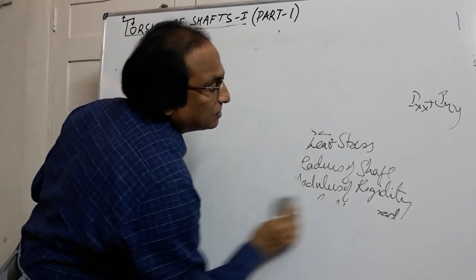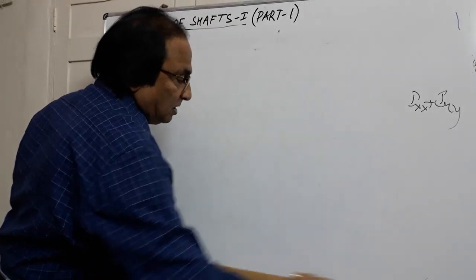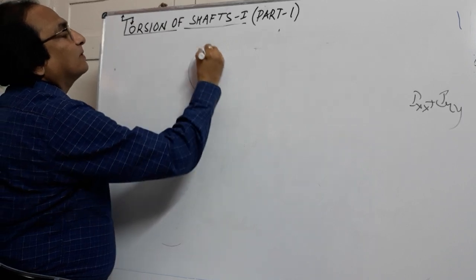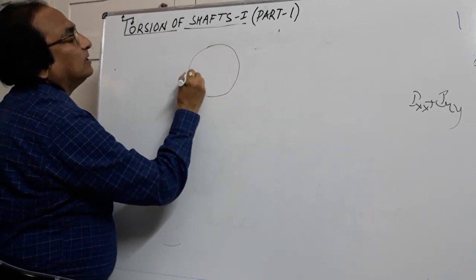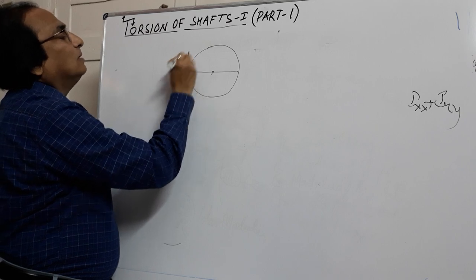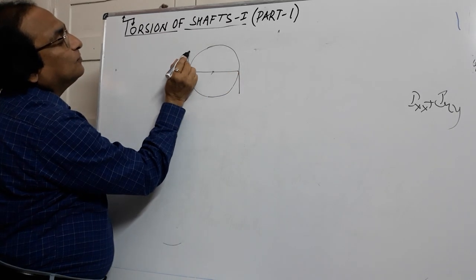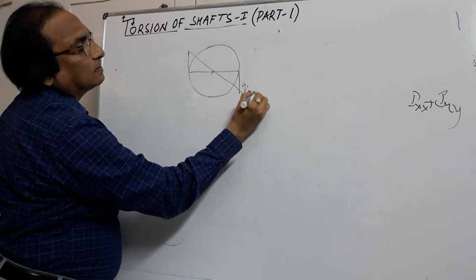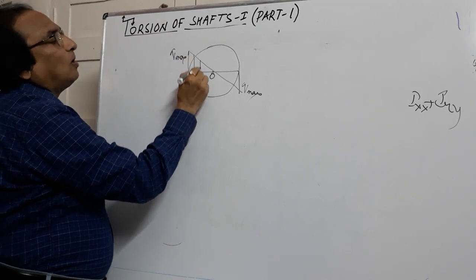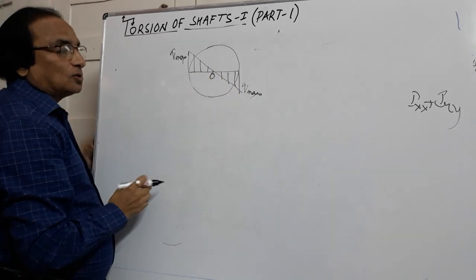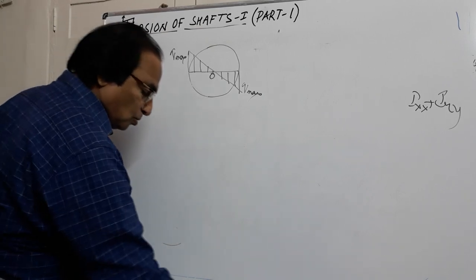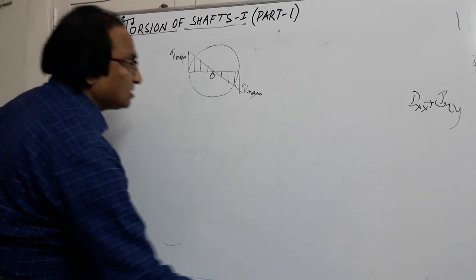For derivation, certain assumptions have already been given in earlier videos. If I plot the shear stress diagram for a shaft, shear stress is zero at the center and maximum on the outer edge — this is Q_max. As you go away from the center the shear stress increases, reaching maximum at the surface. This is the distribution of shear stress across the cross-section.